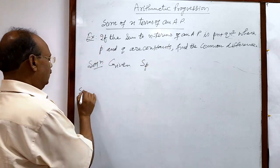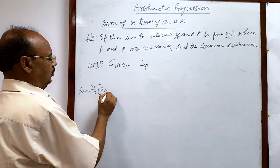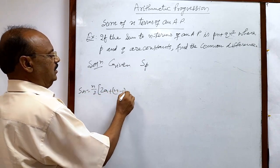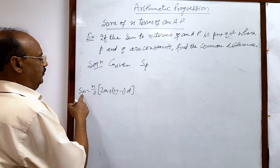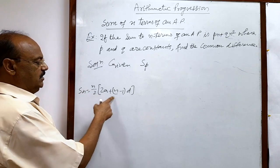You know the formula Sn is equal to n by 2 times 2a plus n minus 1 into d. Here sum of n terms is Sn which is equal to this much.